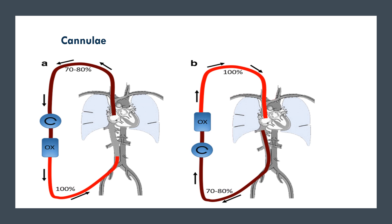The first part of the ECMO circuit is the cannula. Cannulation process and cannula types will have a separate lecture, but here we mention the names. The cannula taking blood from the patient to the ECMO circuit is called the drainage cannula, and the one taking oxygenated blood from the circuit to the patient is called the return cannula.